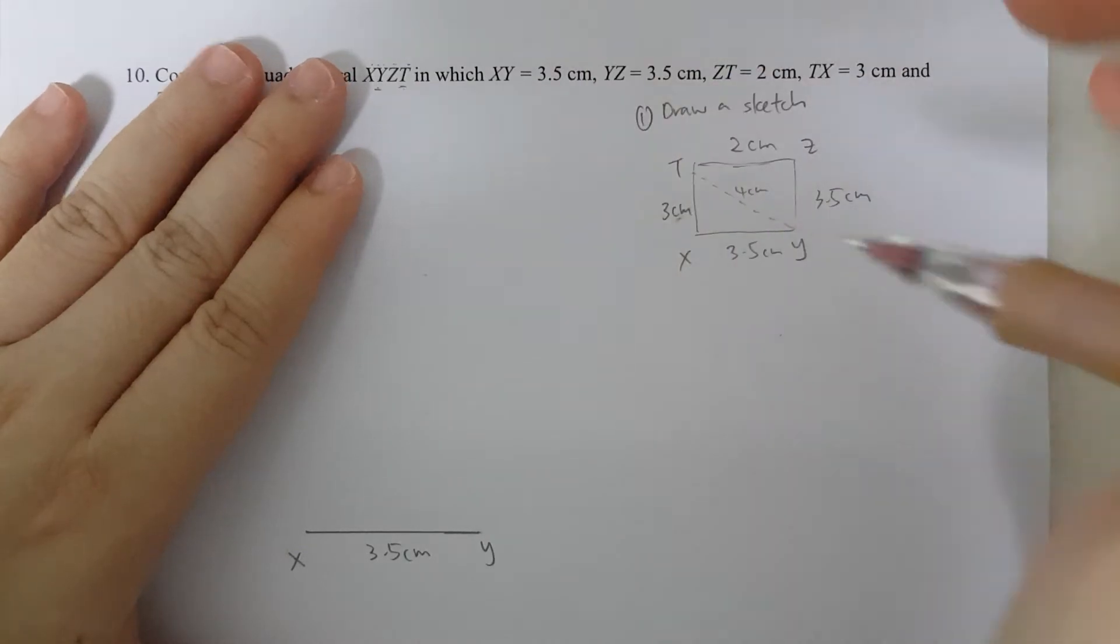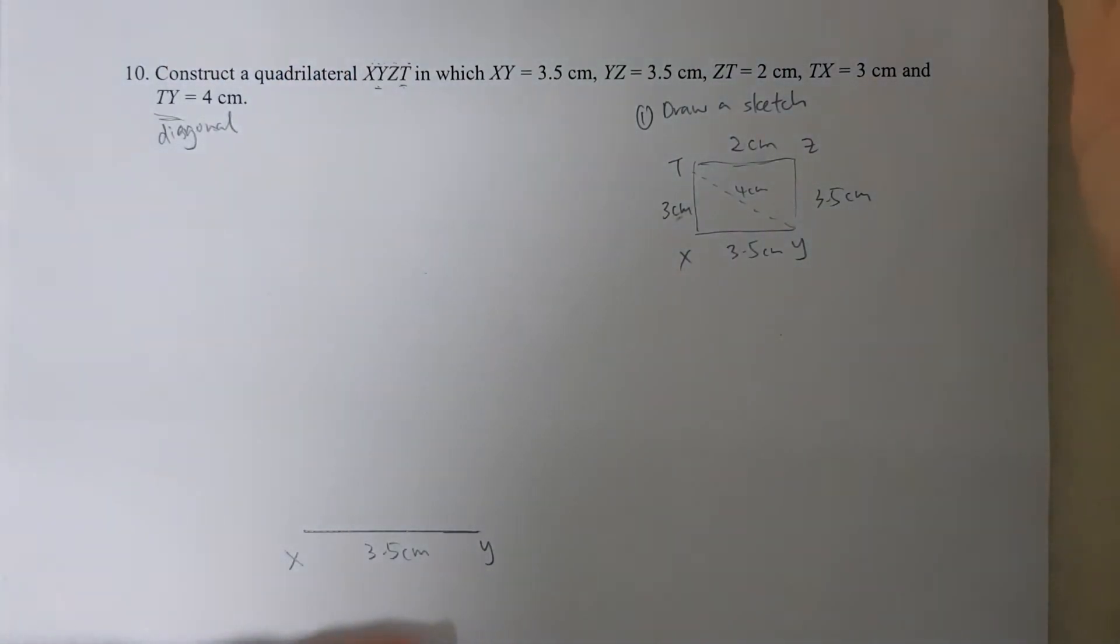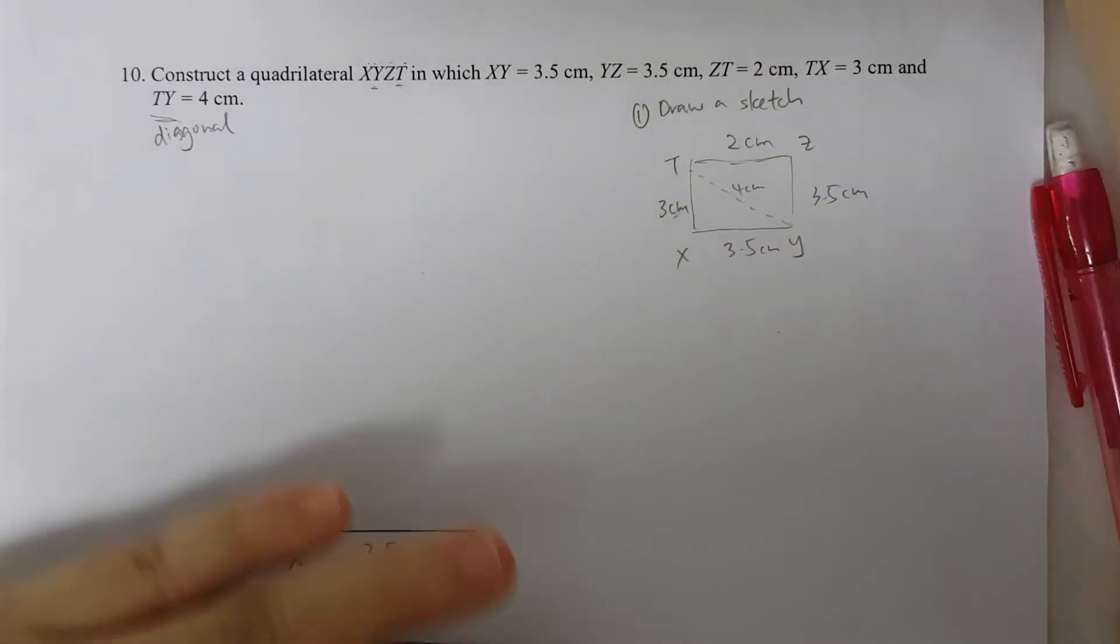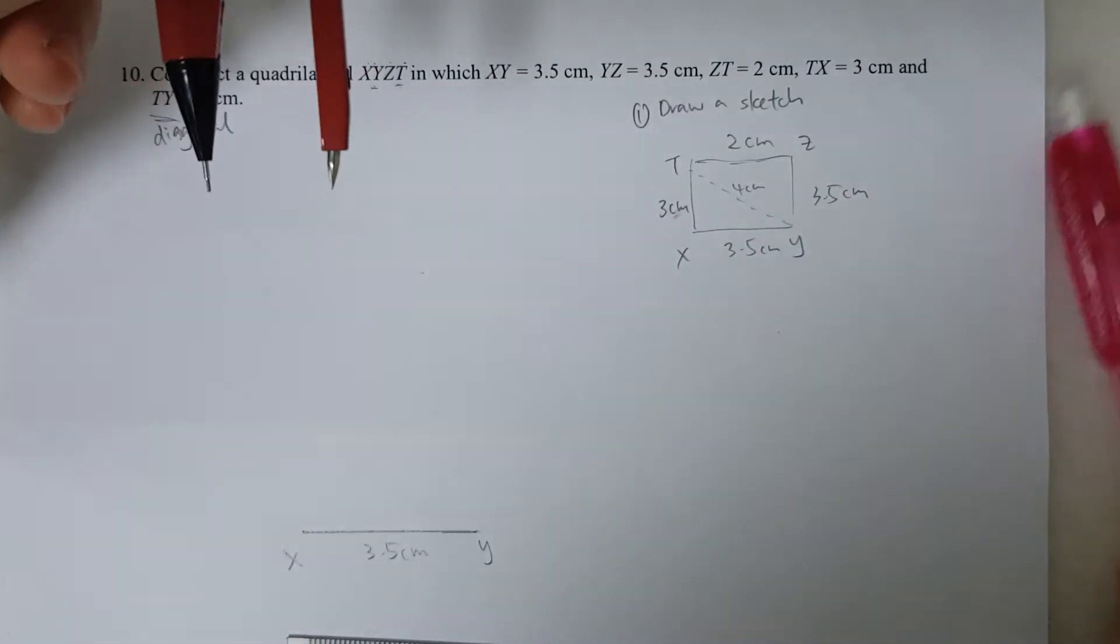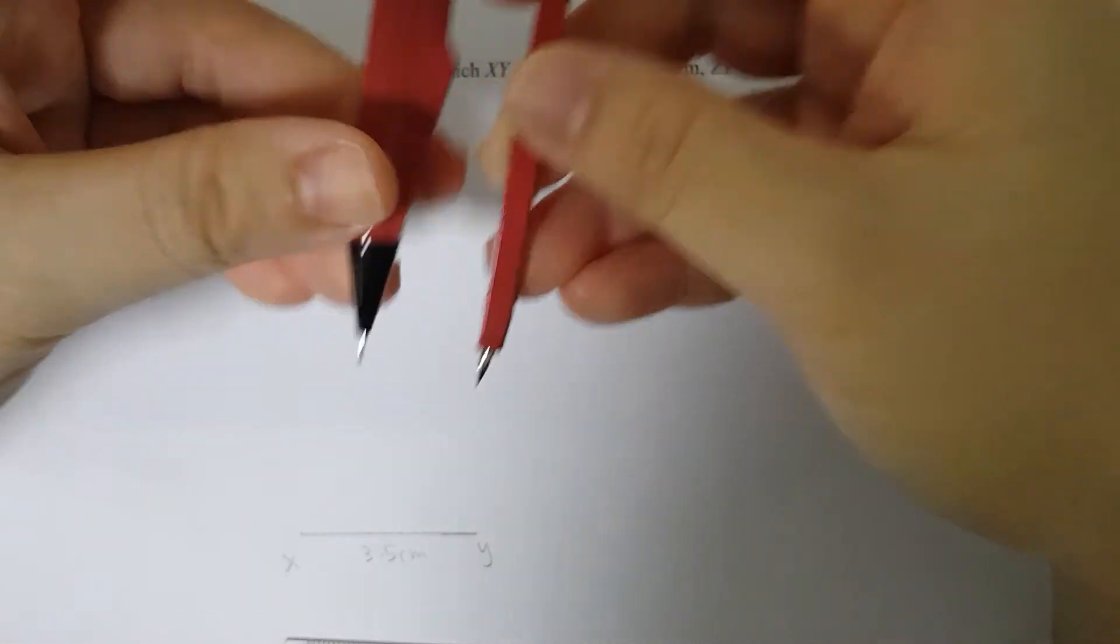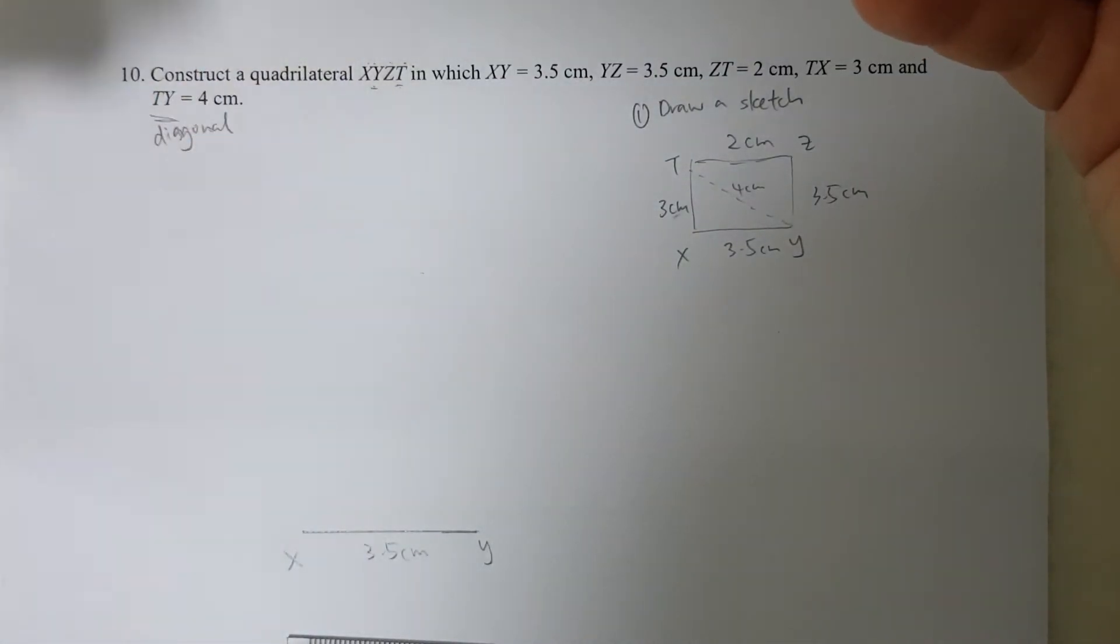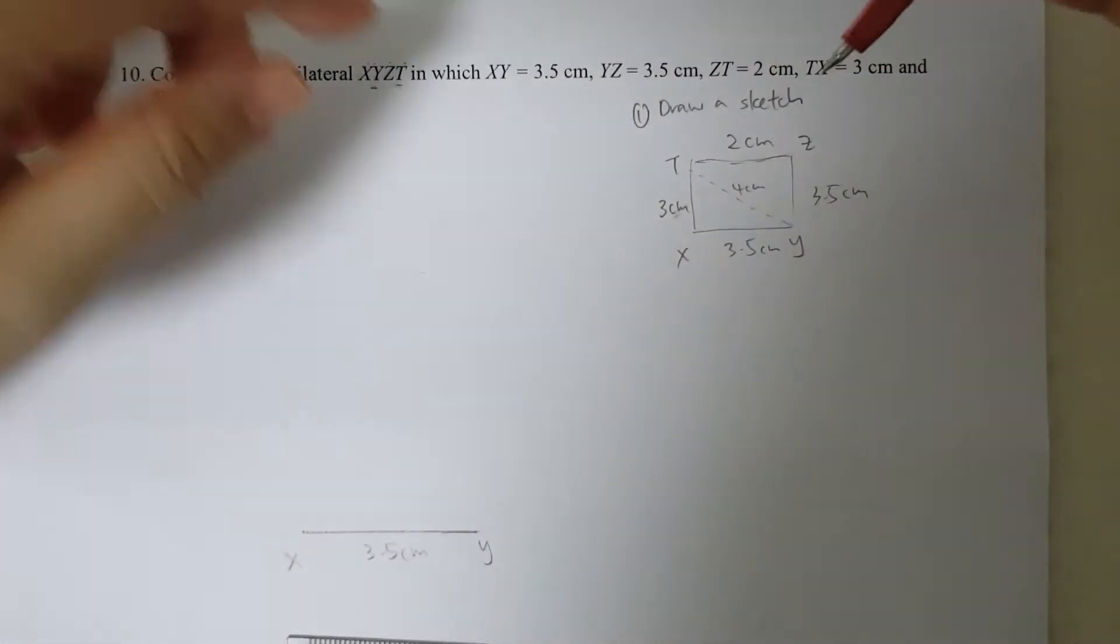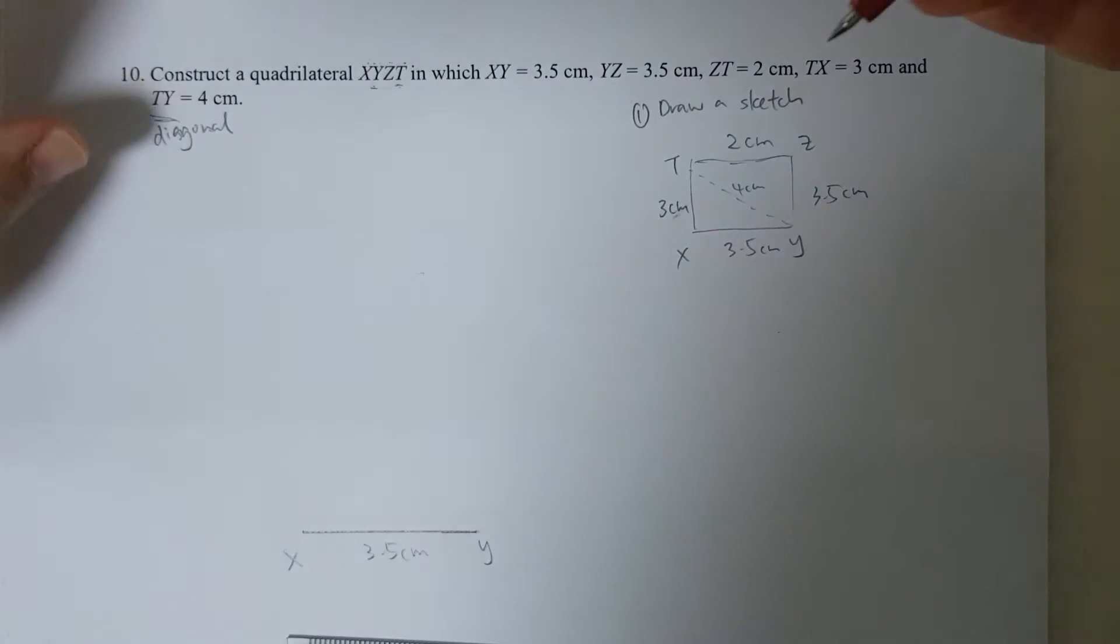Now I have no information about any of the angles. So what I can do now is I have to actually use my compass. This is similar to question 3 of this worksheet, where I have to find the 3rd and 4th points of the quadrilateral using my compass to draw arcs of the lengths that are given.